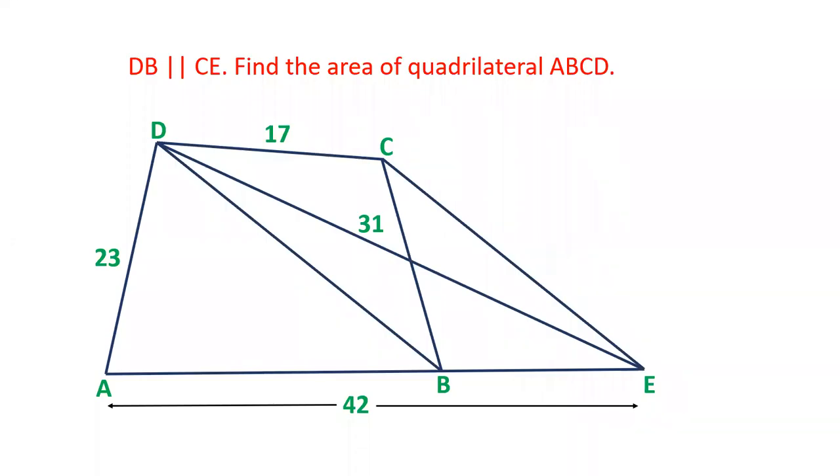Hello friends, welcome to our YouTube channel SSC Selector. In this video, there is a quadrilateral ABCD whose one side is 42, the base. One side is 23, third side is 17.